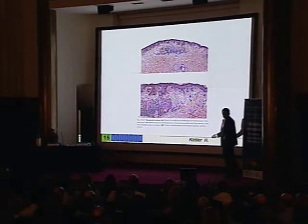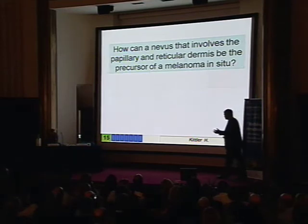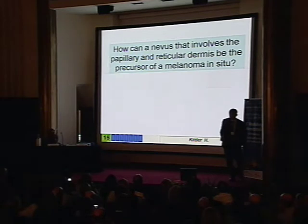So how can this melanoma start in a dysplastic nevus that is shown in a pathology textbook? Impossible. In this nevus? Impossible. How can a nevus that involves the papillary and reticular dermis be the precursor of a melanoma in situ? Impossible.